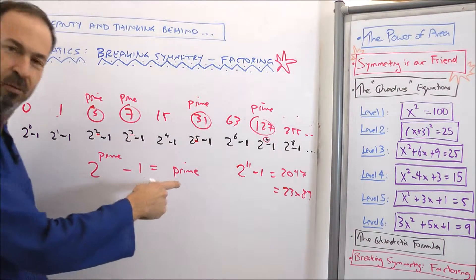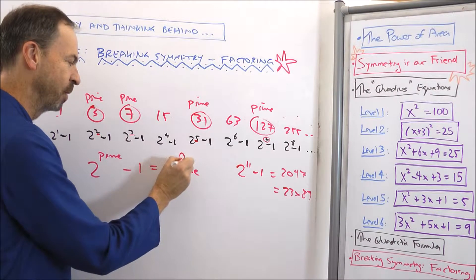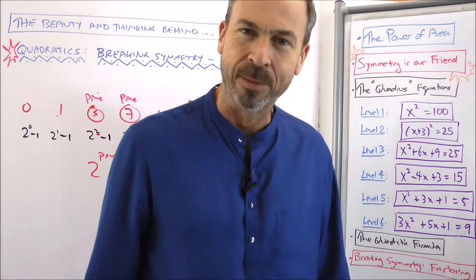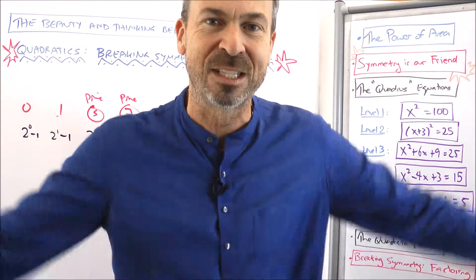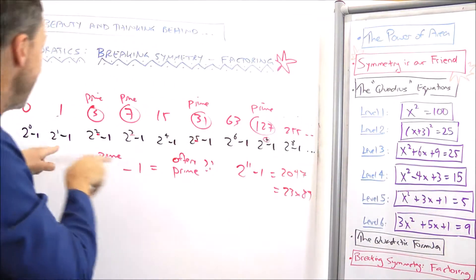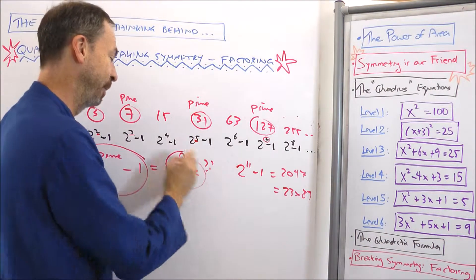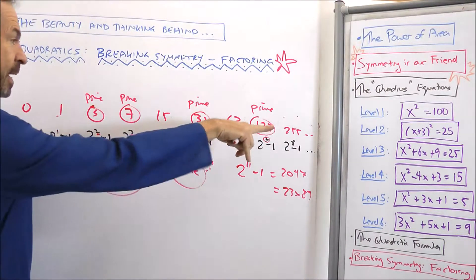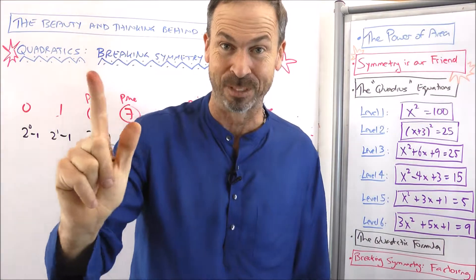Okay, so this pattern is not true in general, but people are wondering: how often is it prime? How often does it become prime? And here is a famous unsolved problem, still unsolved to this day. No one knows how often 2 to the prime minus 1 is actually prime. People have some examples — in fact, people only know 51 examples.